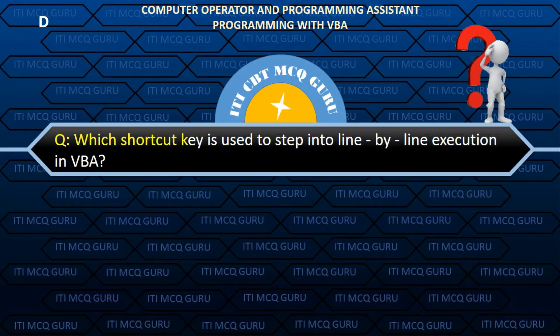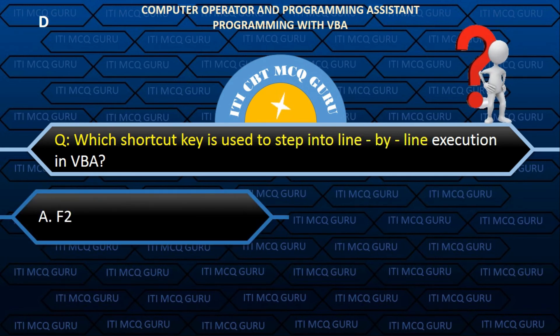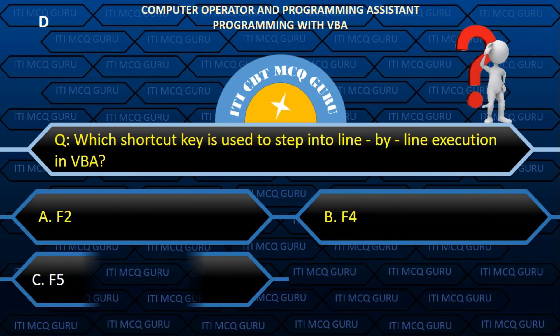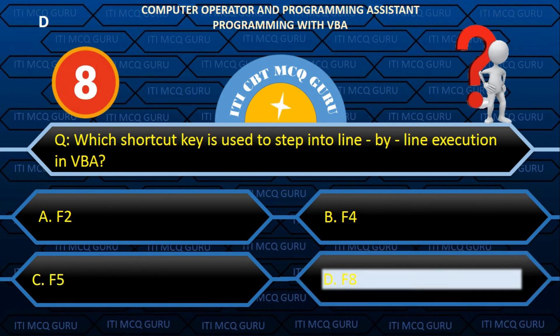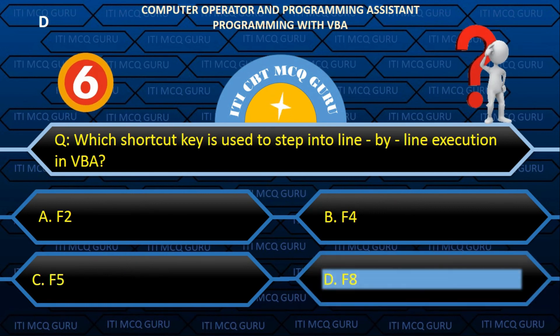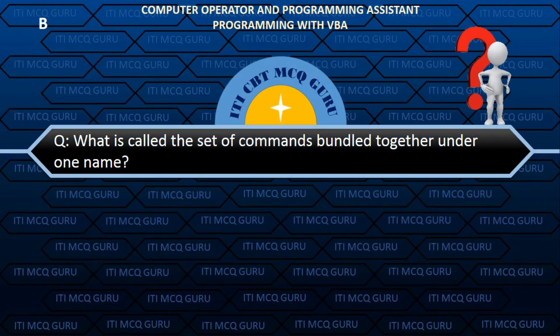Which shortcut key is used for step-by-step execution in VBA? Answer: B. F8.